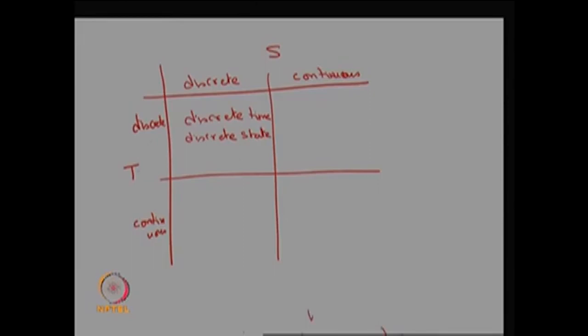If T is discrete and the state space is continuous, it is a discrete-time continuous-state stochastic process. If T is continuous and S is discrete, it is a continuous-time discrete-state stochastic process. If T is continuous and S is also continuous, it is a continuous-time continuous-state stochastic process. Based on the possible values of T and S, any stochastic process can be classified into these four types.